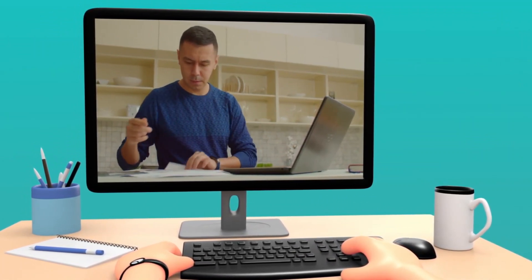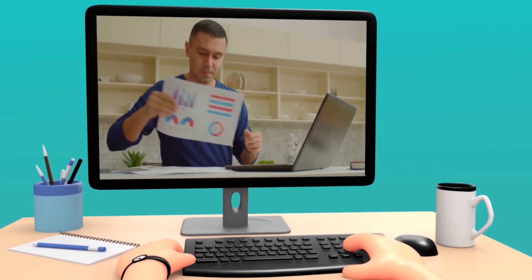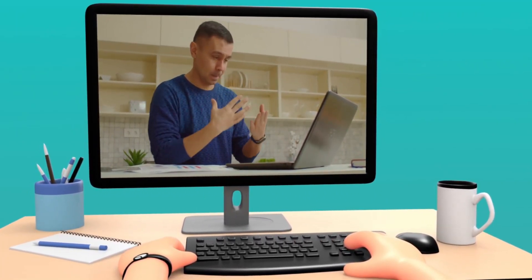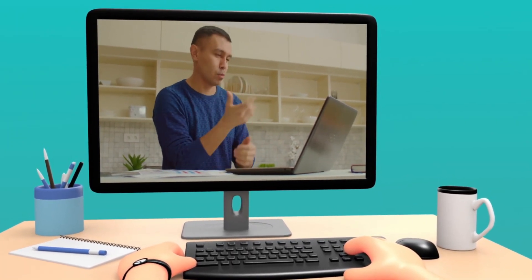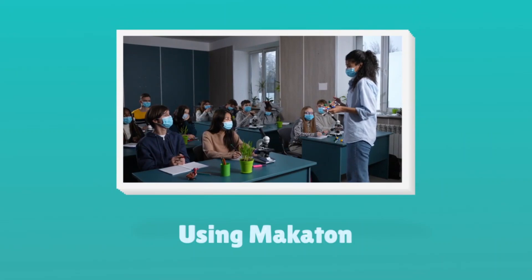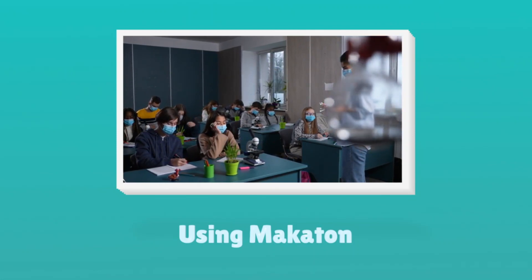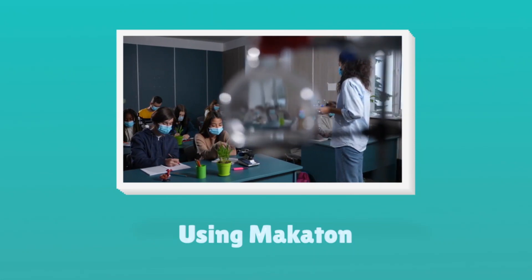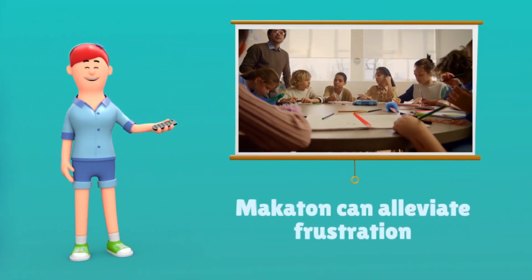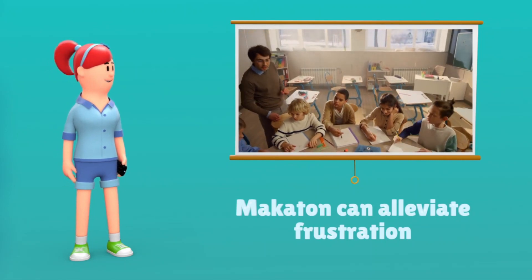In Makaton, you use signs together with speech, with words in English grammatical order. Symbols can be used in addition to or instead of signs. The gestures are based on British Sign Language. You typically sign the keyword while saying the sentence — for example, saying 'Would you like to go to the toilet?' while using the toilet gesture. It is good to use short, simple sentences with body language and eye contact. Makaton can alleviate frustration and let children with autism express themselves. It has eight stages and around 450 words of core vocabulary, starting with basic needs like eating and drinking.